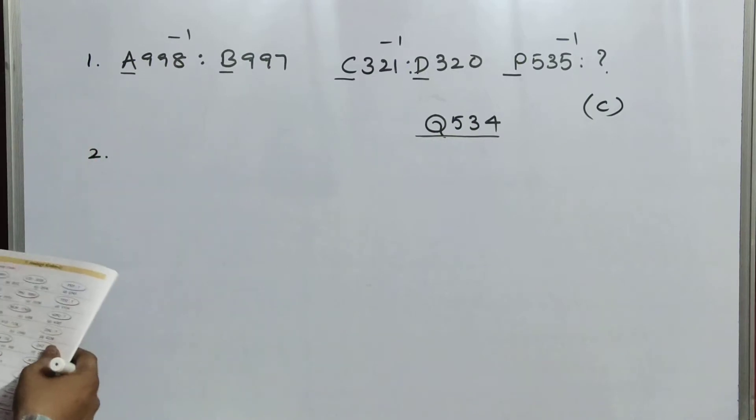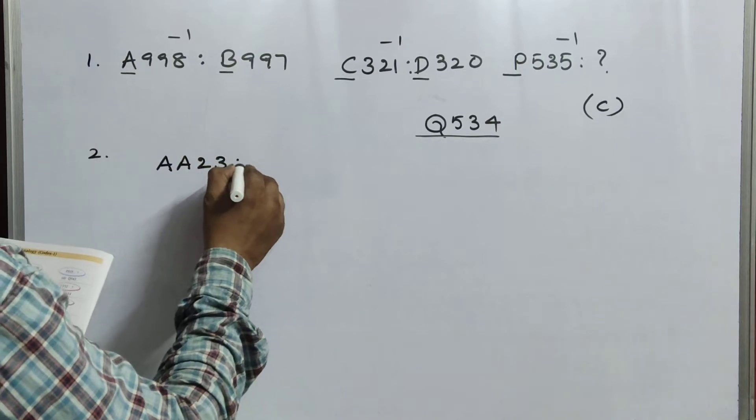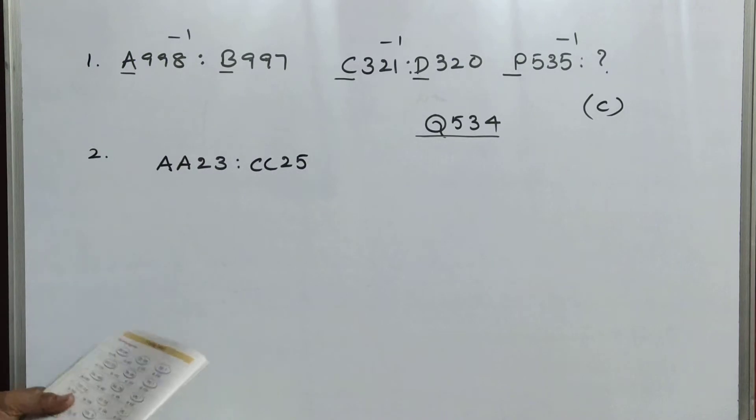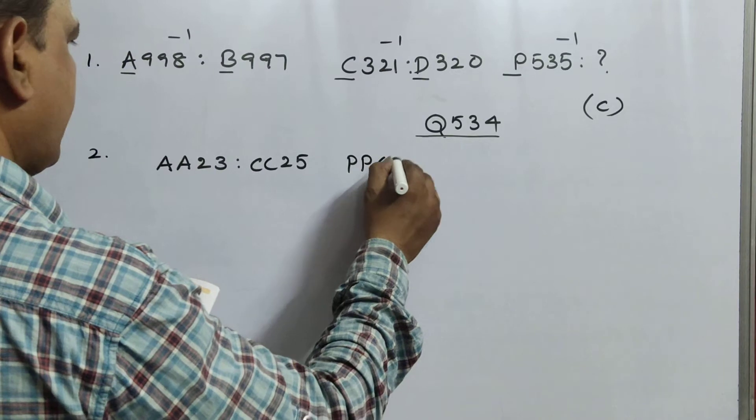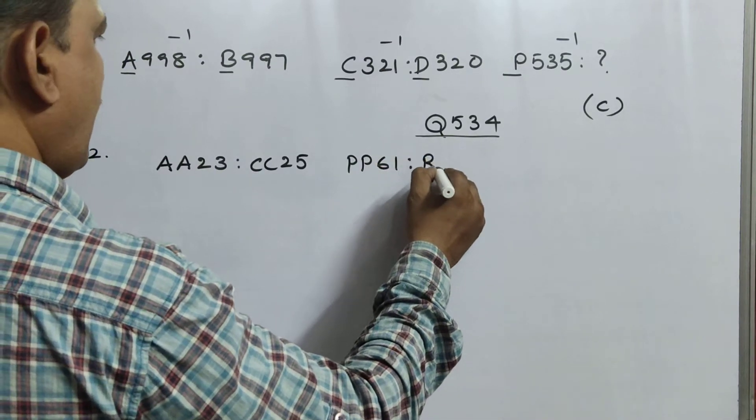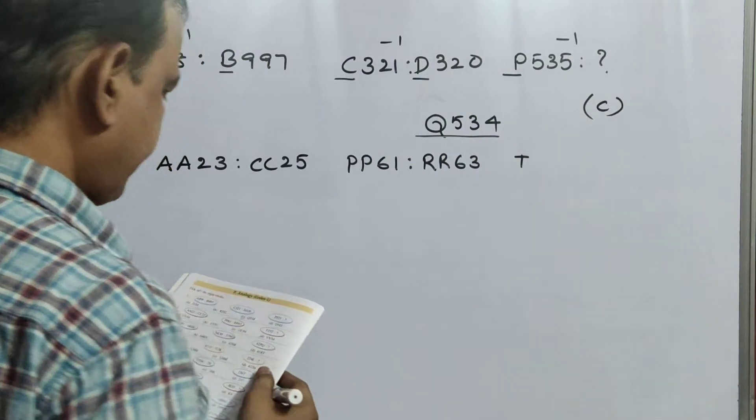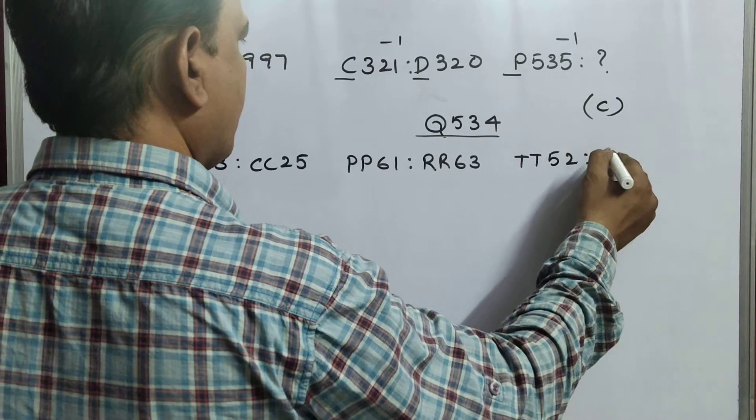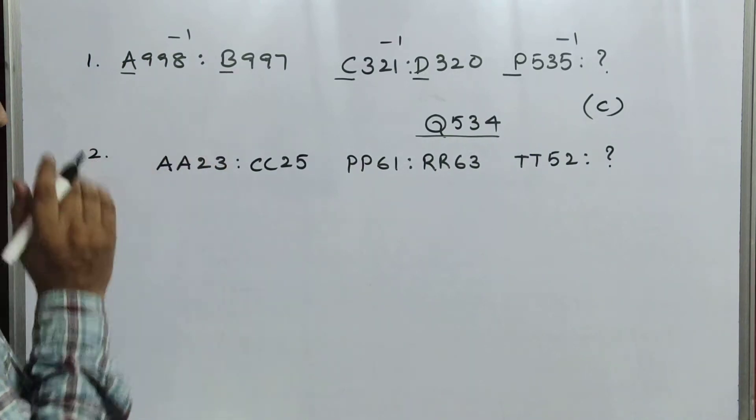Next, second question. AA23 is to CC25. For each and every question, some patterns change. So, we have to observe that one. PP61, RR63, TT52 question mark. What are it may be? First, we will go with the question.